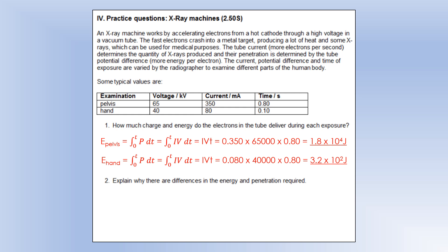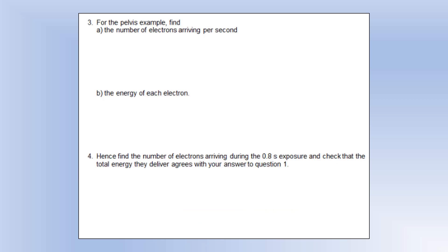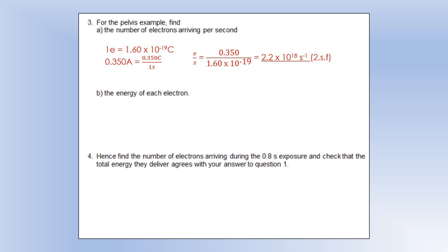Explain why there are differences in the energy and penetration required. The key is the pelvic bone is much thicker than the hand bone, and therefore you're going to need higher penetration for the pelvis and therefore higher energy. For the pelvis example, find the number of electrons arriving per second. The 0.35 amps is 0.35 coulombs per second — divide that by the charge of one electron and that gives you the number of electrons per second.